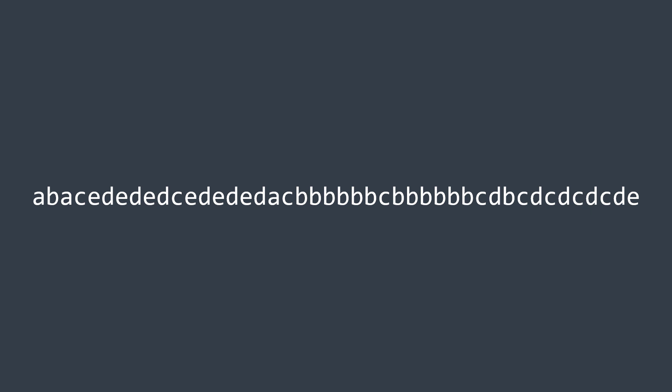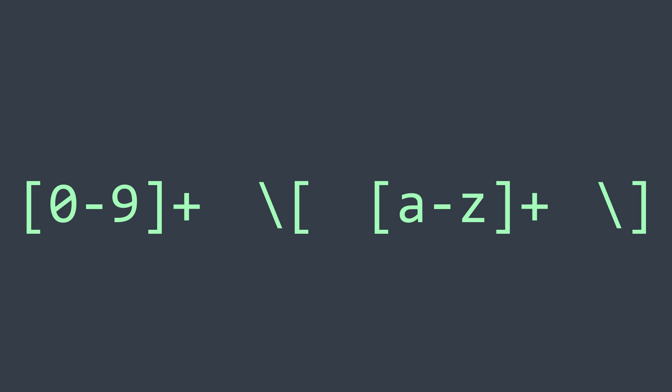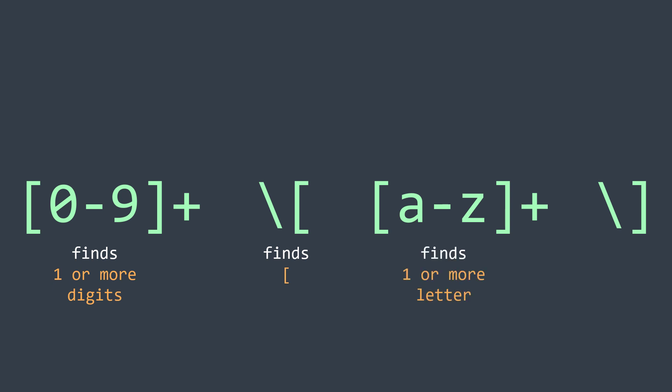The regular expression used to find matching substrings has four parts: [0-9]+ means one or more digits; \[ means find an opening bracket; [a-z]+ means one or more alphabetical letters; and \] means find a closing bracket. So this regular expression matches strings with one or more digits, then an opening bracket, then one or more alphabetical letters, then a closing bracket.